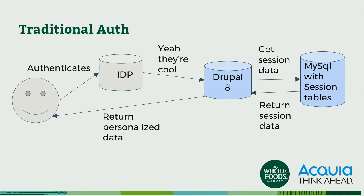With traditional authentication, here's how it works. You have a user — they're still happy, we'll try to keep them that way. They hit some sort of an identity provider — maybe it's Drupal traditionally. They'll send their username and password over SSL. It says yeah, they're cool. Then Drupal will go and query a session table to get any data associated with that session, typically hitting MySQL. It will return that data, manipulate it a little bit, and send some personalized data back to that user. That's our traditional model overall.